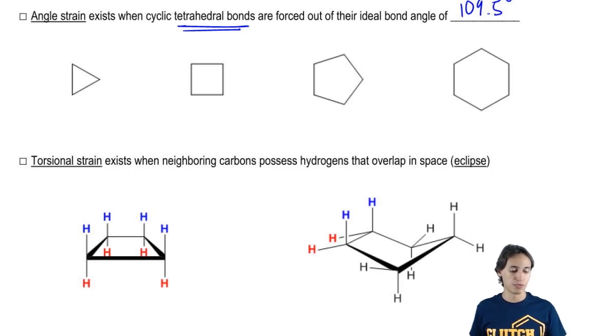So let me just give you an example of a triangle. I'm not sure if you guys remember from geometry, but a triangle, like if you have an equilateral triangle, each of these corners is going to be 60 degrees. Is 60 degrees close to 109.5? Not even close.